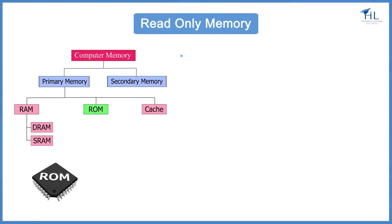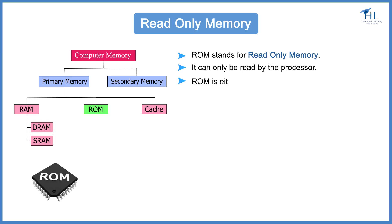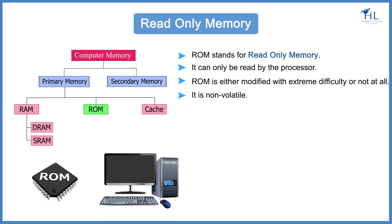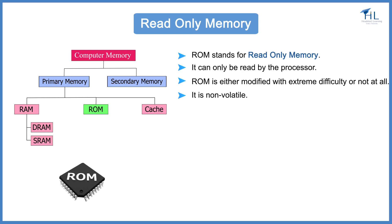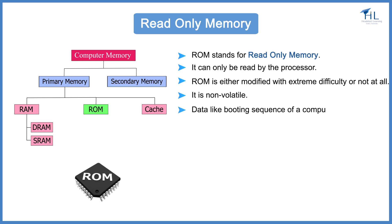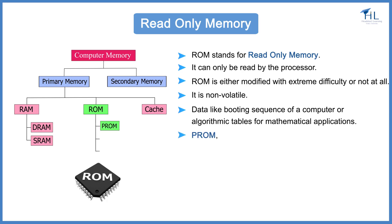ROM stands for Read Only Memory. As the name suggests, ROM can only be read by the processor. It is either modified with extreme difficulty or not at all. ROM is non-volatile — that is, it retains its data even when power is switched off. Data to be stored in ROM is written during the manufacturing phase itself. It contains data that does not need to be altered, like the booting sequence of a computer or algorithmic tables for mathematical applications. PROM, EEPROM, and EPROM are types of ROM.